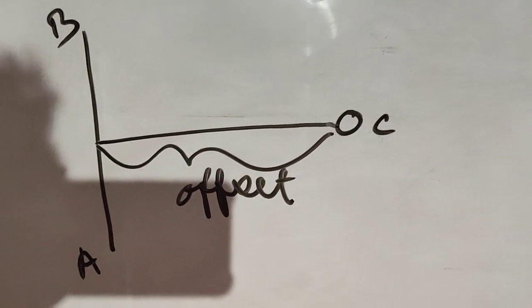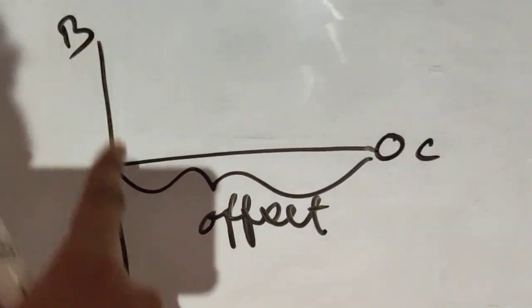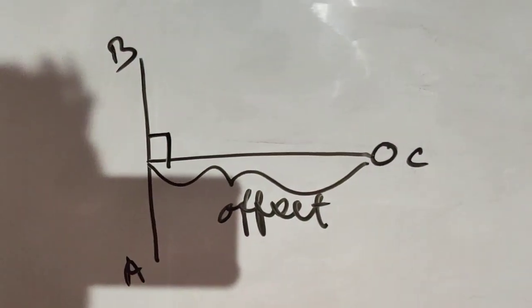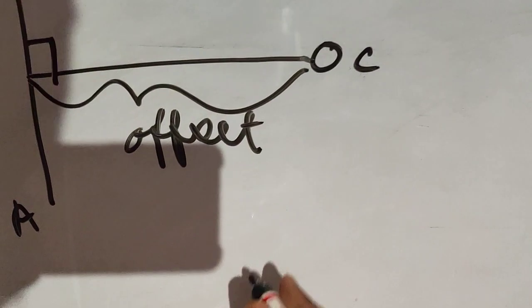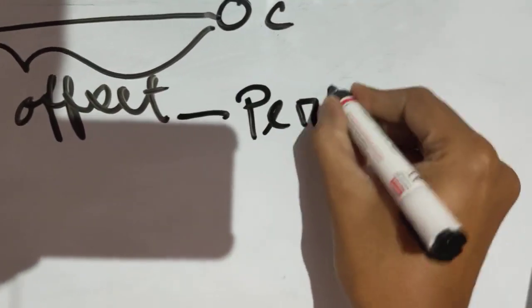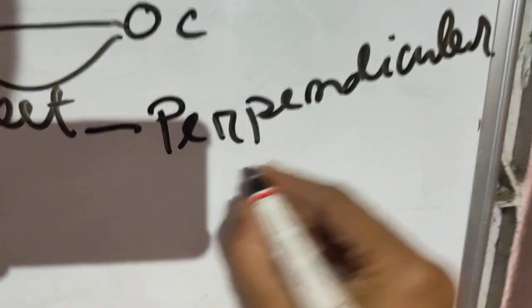Now, if this offset is perpendicular to the chain line, suppose if this is an angle 90 degree, if it is perpendicular to the chain line, then this offset is called perpendicular offset.